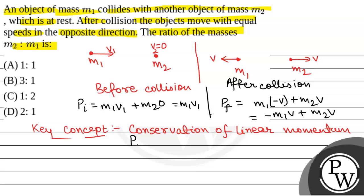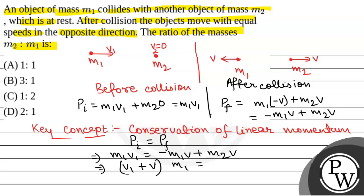Applying conservation of linear momentum, initial momentum equals final momentum: m1·v1 equals minus m1·v plus m2·v. Rearranging, (v1 + v)·m1 equals m2·v, giving us m2/m1 equals (v1 + v)/v.